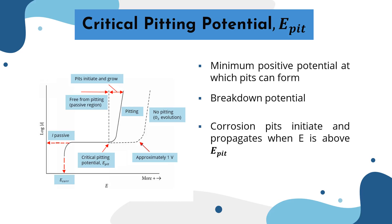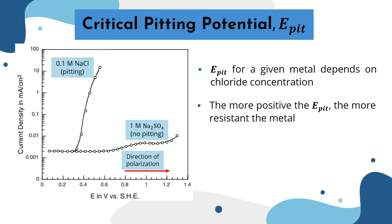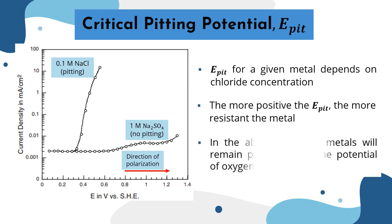Corrosion pits only initiate and propagate when the potential is above the critical pitting potential. When the potential is below the critical potential value, pitting does not occur. The critical pitting potential for a given metal depends on the chloride concentration. For a given chloride concentration, the more positive the critical pitting potential, the more resistant the metal to pit initiation.